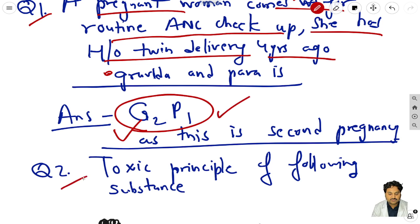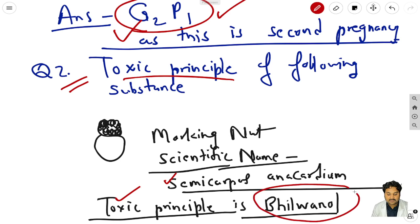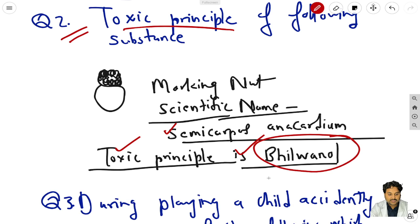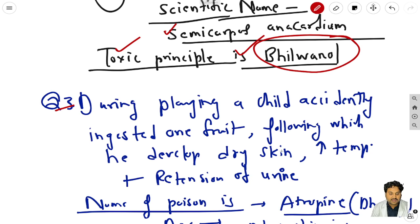Question 2: toxic principle of the following substance. The marking nut - scientific name is Semicarpus anacardium - the toxic principle is bhilawanol (bhilwa-nol).